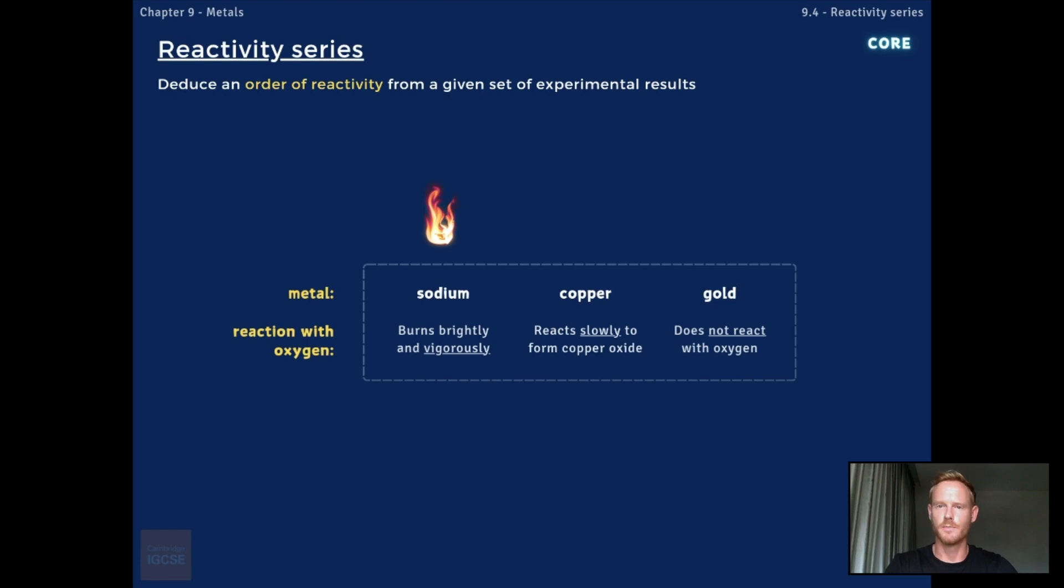if we observe that sodium burns brightly and vigorously in air, copper reacts slowly to form an oxide, and gold does not react with oxygen at all, we can deduce that sodium is the most reactive of the three metals, so should be placed at the top of the order, and that gold is the least reactive and should be placed at the bottom.